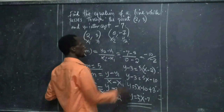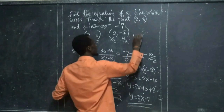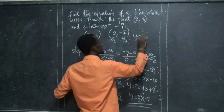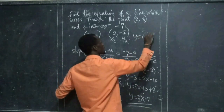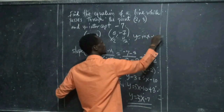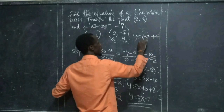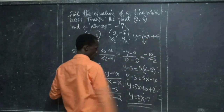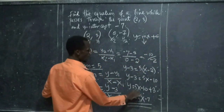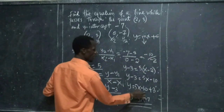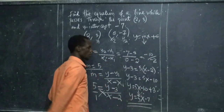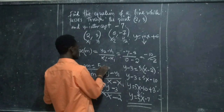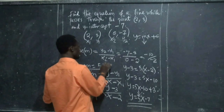Then y is equal to 5x minus 7. This is the equation. Your equation must be written in the form y equals mx plus b. This is our slope — as you can see, our slope is 5, and here our slope is also 5.